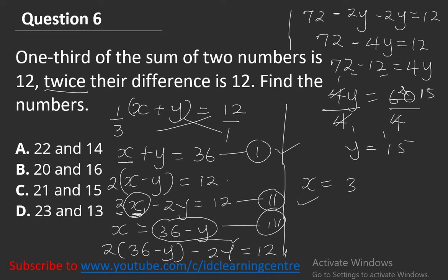Now solving for x: x equals 36 minus y equals 36 minus 15 equals 21. So the two numbers are x equals 21 and y equals 15. If I was too fast, kindly take the video back and ensure you followed all my steps. You can also drop a comment for me to render more assistance if needed.